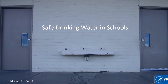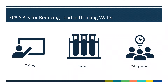Welcome to part two in the online training series about drinking water safety in schools. EPA's guidance for reducing lead in drinking water, called the Three Ts, provides tools for schools, child care facilities, states, and water systems to implement voluntary lead in drinking water testing programs. Three Ts stands for training, testing, and taking action. EPA has developed a toolkit to help put each of the Three Ts into action.